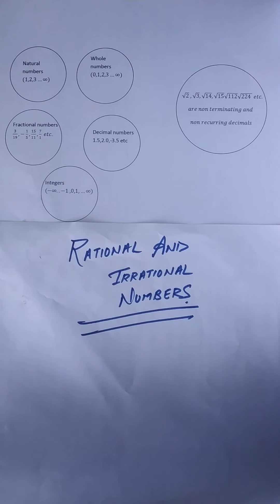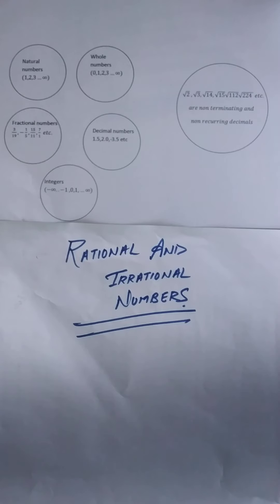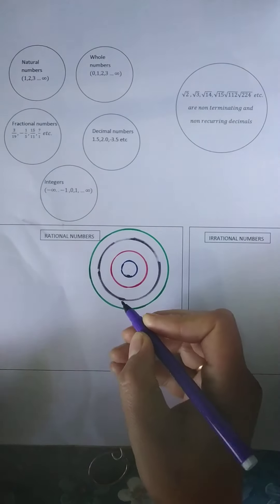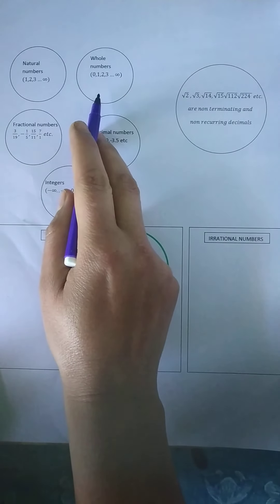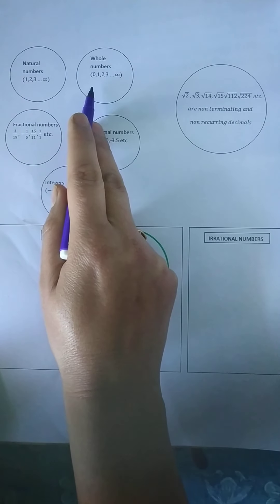There are more number families, as you can see here — rational and irrational numbers. We have to study them now. But before we study them, let's have a look at the older number families to give them a compact form. I'll try and create a Venn diagram for these numbers here. First of all, natural numbers and whole numbers — they just differ by a zero.